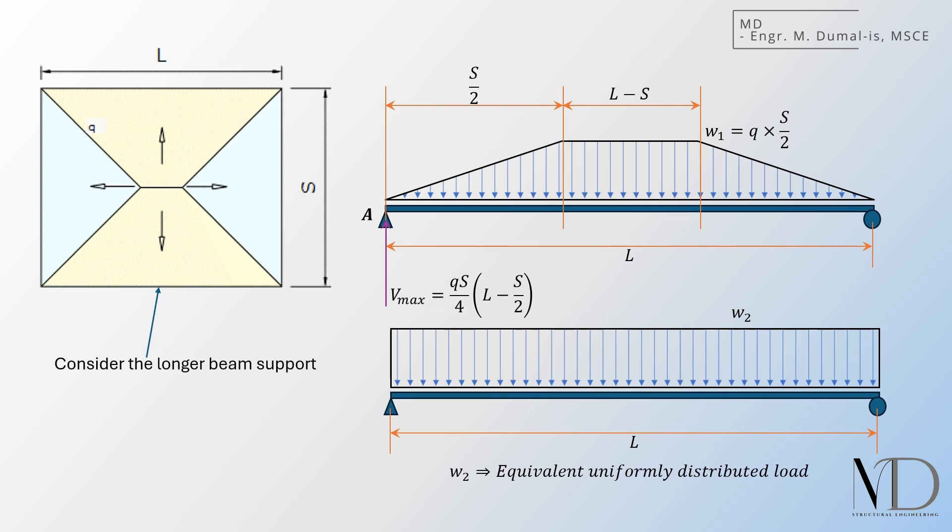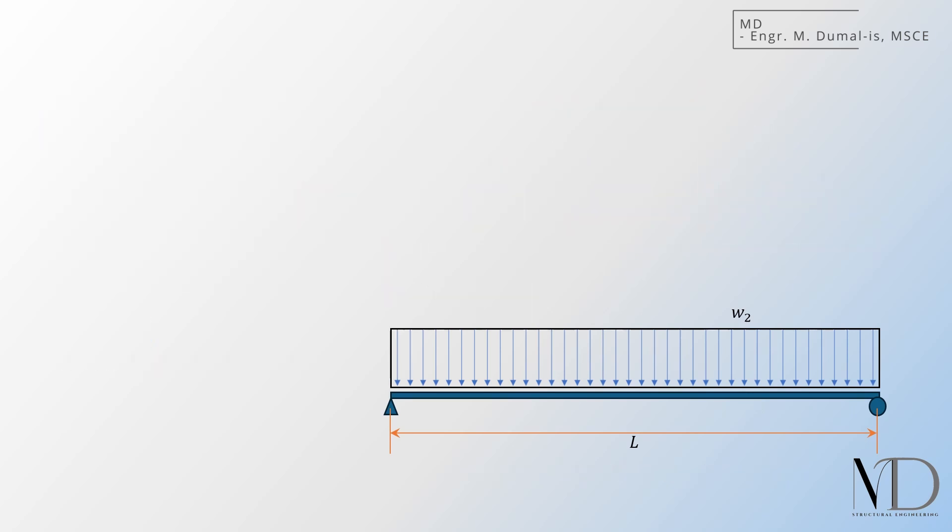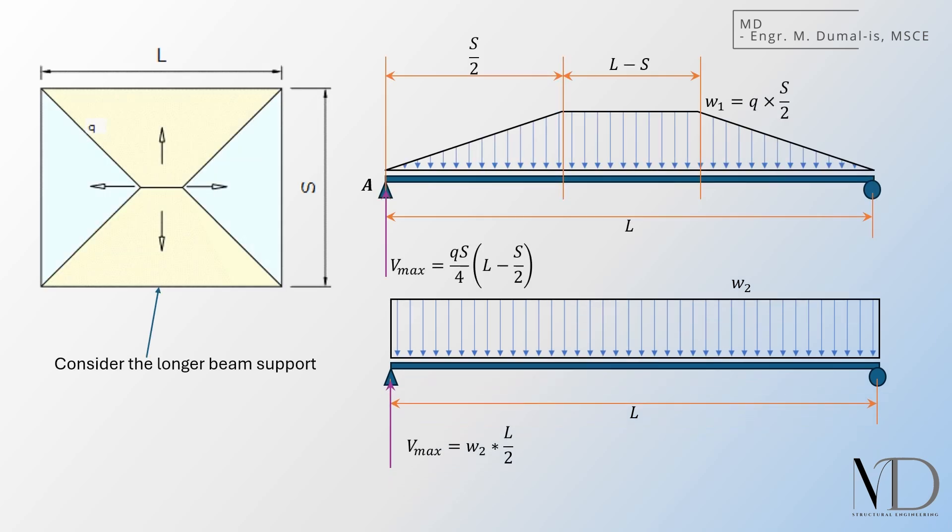Next, we solve for the support reaction of the beam with UDL at support A as well. Now that we have both of the supports, we can now assume that they are equal. To recap the principle of the method, what we are after is an equivalent UDL that would give an equal maximum shear as a trapezoidal load. The UDL is represented by variable W2. From the equation we've just obtained, we can isolate W2 and the result is as follows.